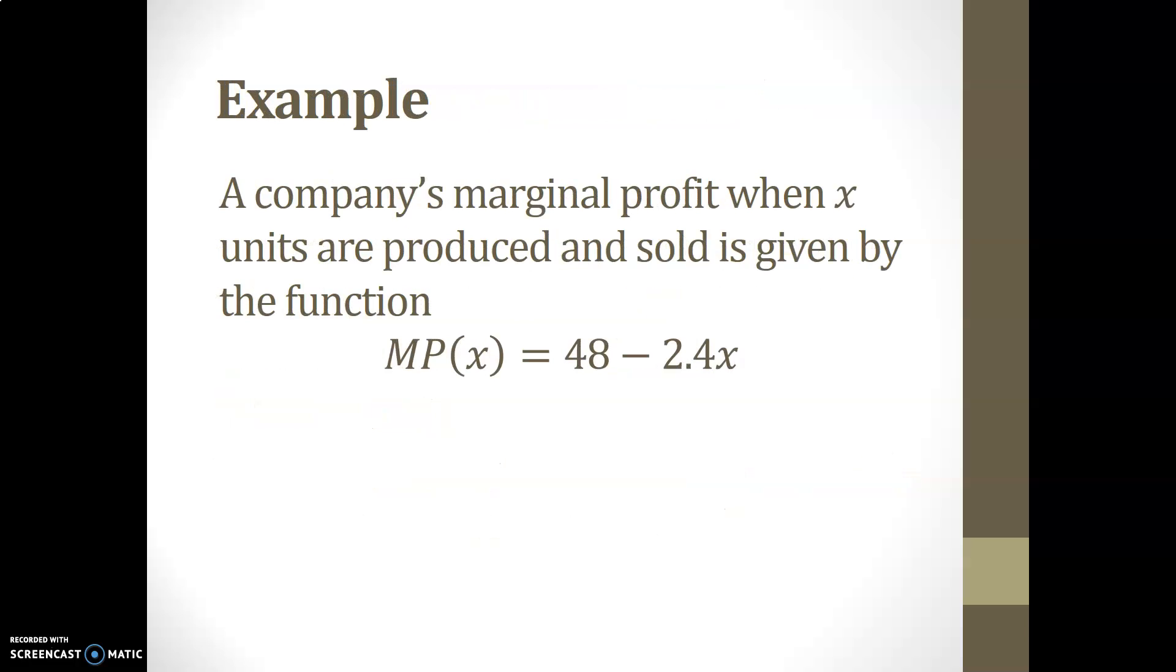Here's an example of that kind of situation. A company's marginal profit when x units are produced and sold is given by the function MP for marginal profit is equal to 48 minus 2.4x.